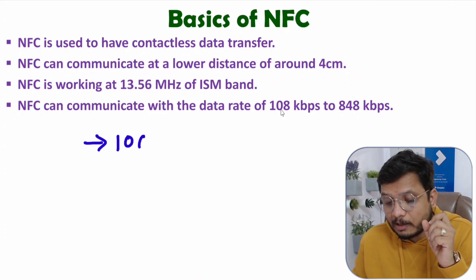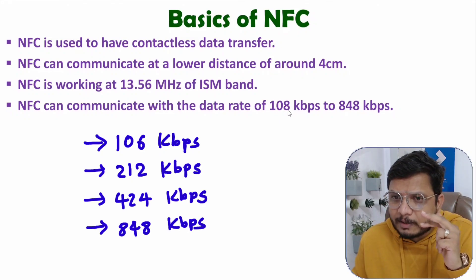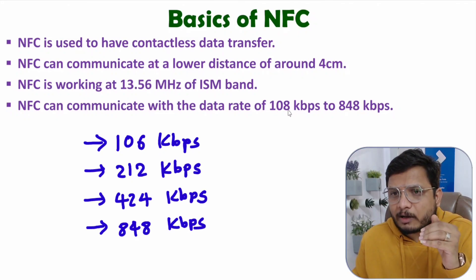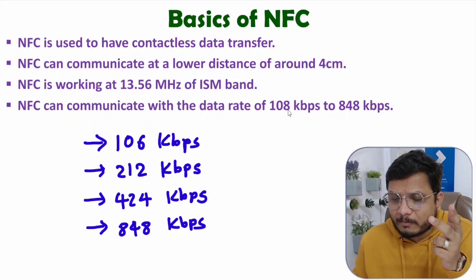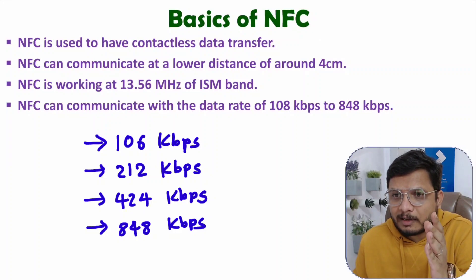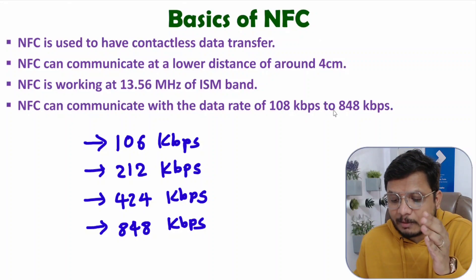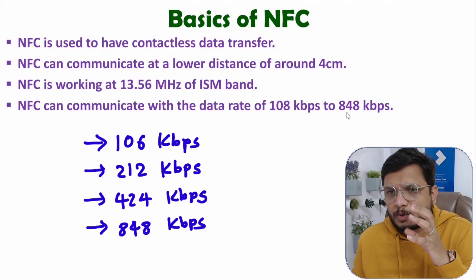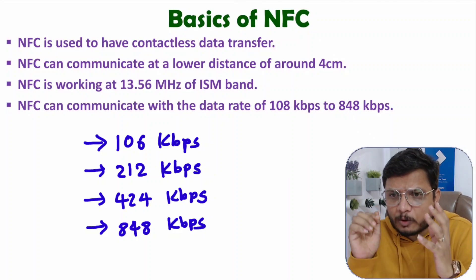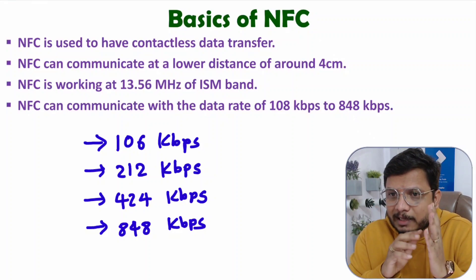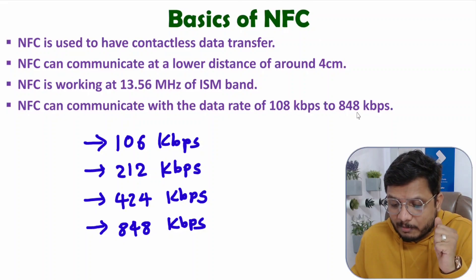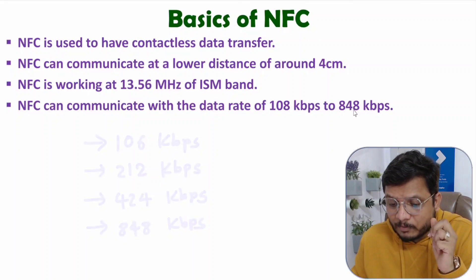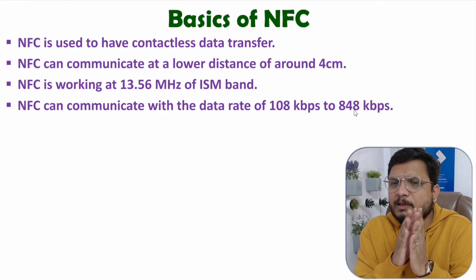One can have a data rate of 106 kbps. Multiply by 2 and you get 212 kbps. Multiply by 2 again and you get 424 kbps. Multiply once more and you can have a maximum data rate of 848 kbps. Different protocols are available, and based on that one can have different data rates. At higher data rates the distance of communication will be very less — almost only a few centimeters.